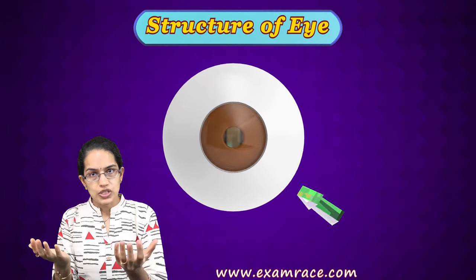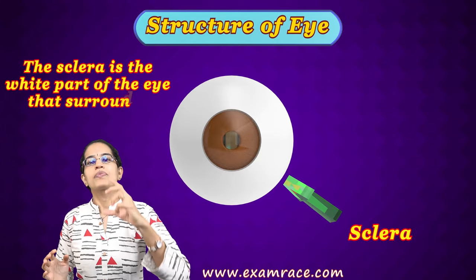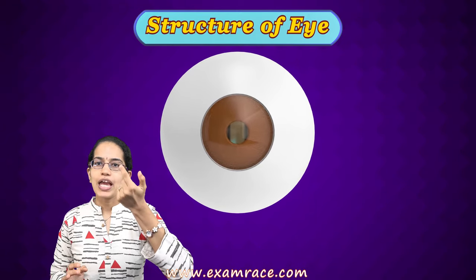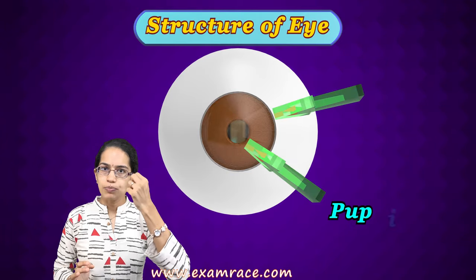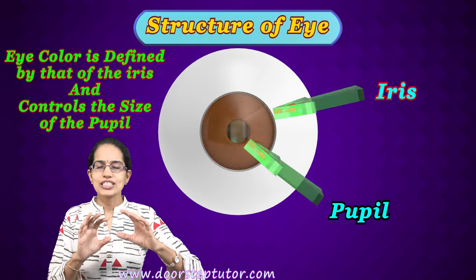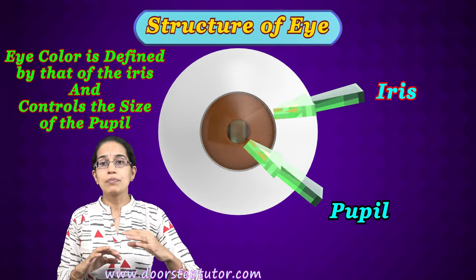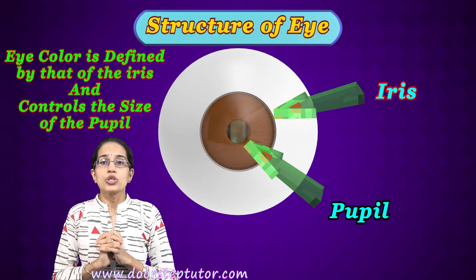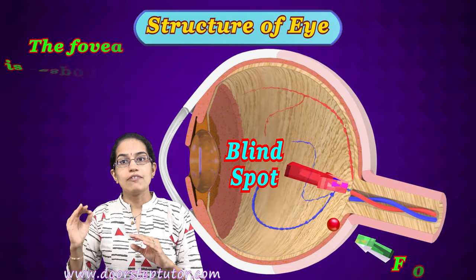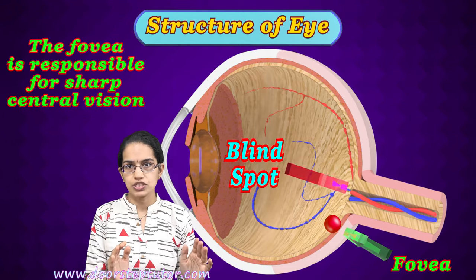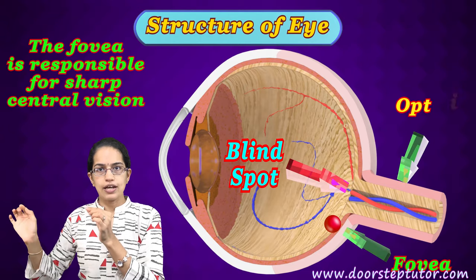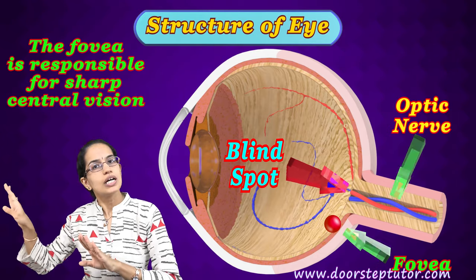A quick recap: the outermost layer is the sclera, which is the white tough coating. The front part of the sclera is transparent — that is the cornea. Inside the cornea, we have two concentric rings: the innermost is the pupil, and outside the pupil is the iris, which gives you the color of the eye — blue, brown, or black. Then we have the blind spot where vision is absent, and the fovea where we have the brightest, clearest vision. Finally, the eye connects to the optic nerve, which sends the light signal as an electrical signal to the brain.